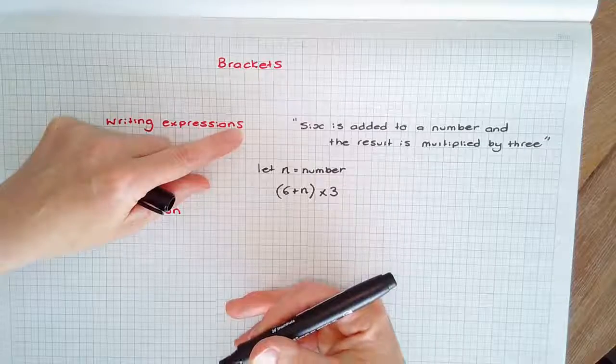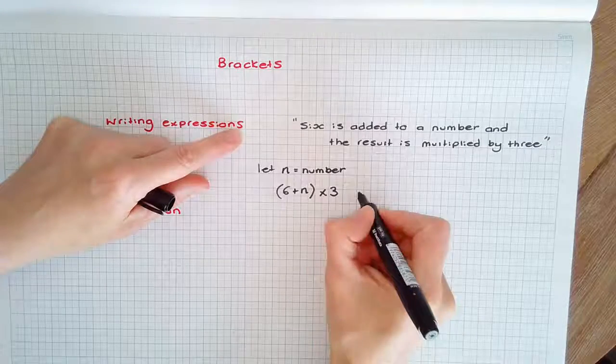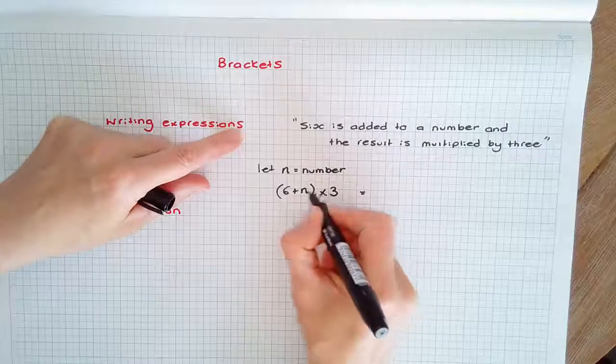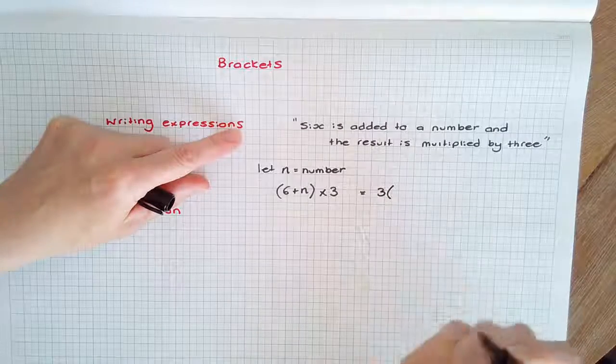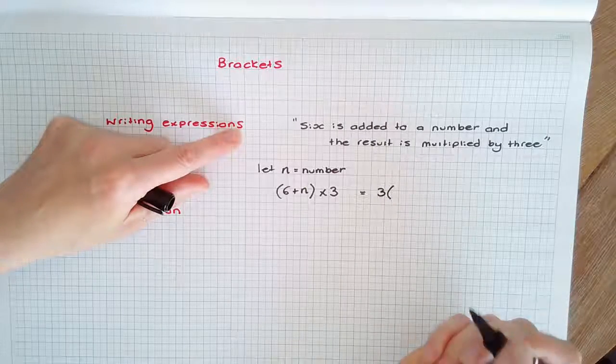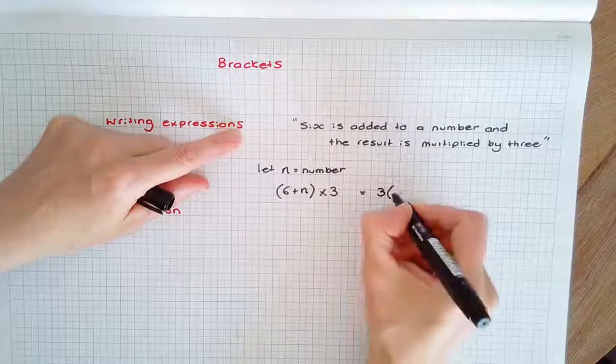We wouldn't leave this as our final answer in algebra. We write the three times a bracket out in front, omitting the multiplication sign, and then we tend to write the pronumeral and the constant last.